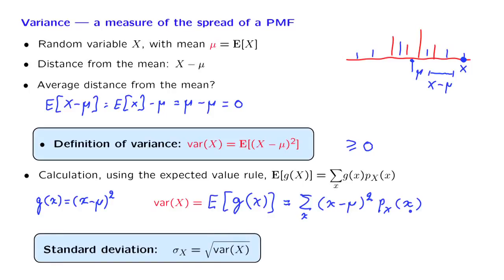One final comment: the variance is a bit hard to interpret because it is in the wrong units. If capital X corresponds to meters, then the variance has units of meters squared. A more intuitive quantity is the square root of the variance, which is called the standard deviation. It has the same units as the random variable and captures the width of the distribution.